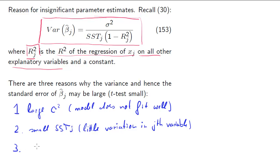Or third, we may have the situation that we have very large R squared j, and therefore large means very close to 1, and that makes this parenthesis term in equation 153 close to 0, and therefore causes a large variance. So this is the case where the variation in the j-th variable can be explained, or a large degree of that variation can be explained by the other variables.